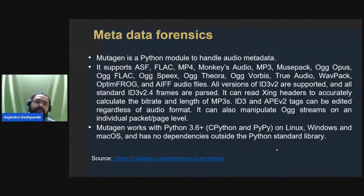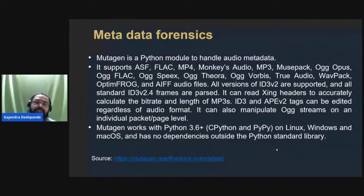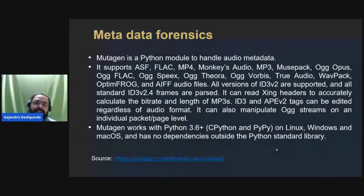The next topic is metadata forensics, where we extract information from different types of files — audio files, video files, PDF files, and portable executable files. Mutagen is a Python module which can be used to handle audio metadata. It supports different formats such as MP3, MP4, Ogg Vorbis, etc. Using the mutagen library, you can extract information such as format, duration, and bits per second from audio files.